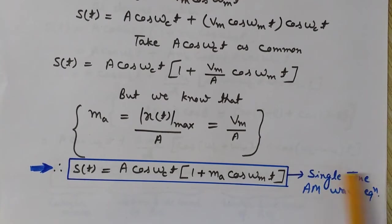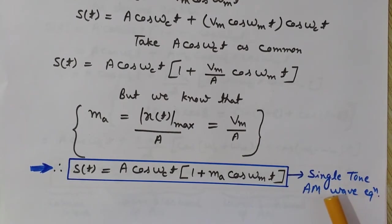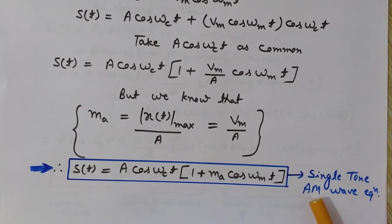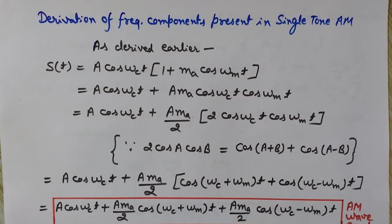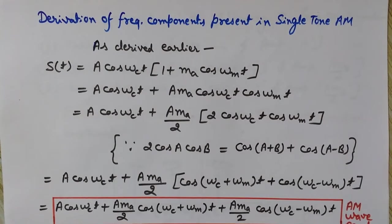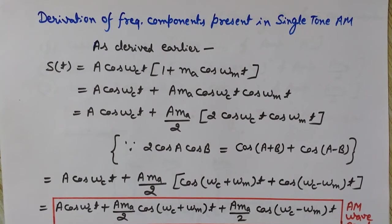This is the single-tone AM wave equation, where the modulating signal has only one frequency instead of a large number of frequencies as in the general case. Keep this in mind — this is a very important equation of the amplitude modulated wave for single tone.